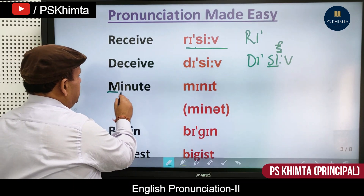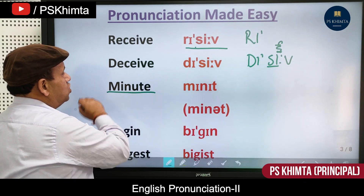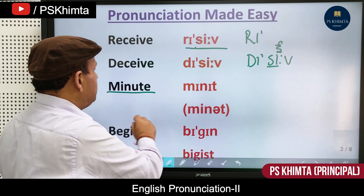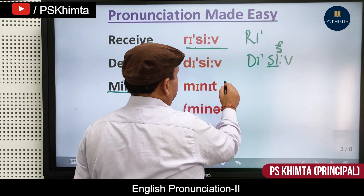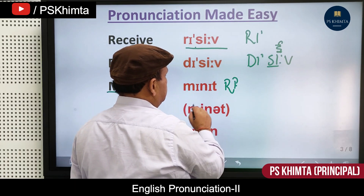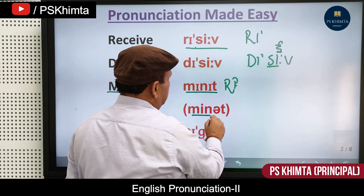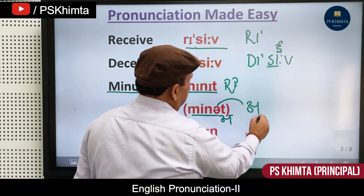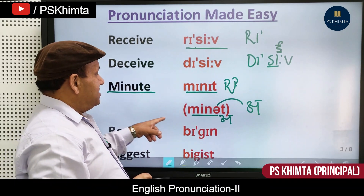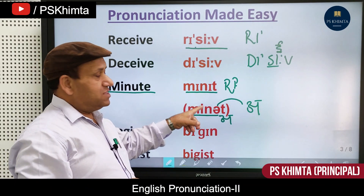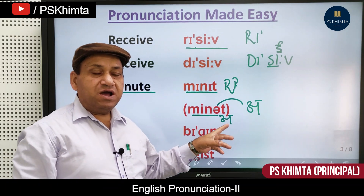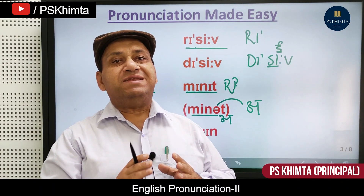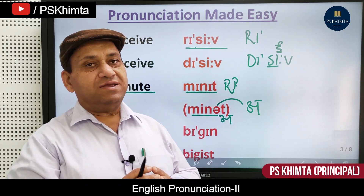Next is 'minute.' The spelling has a 'u' which causes confusion for small children. In Indian English we say 'minute,' but the correct British Received Pronunciation — BBC pronunciation — is 'minute' (me-nit). For example: '10 minutes to go.'